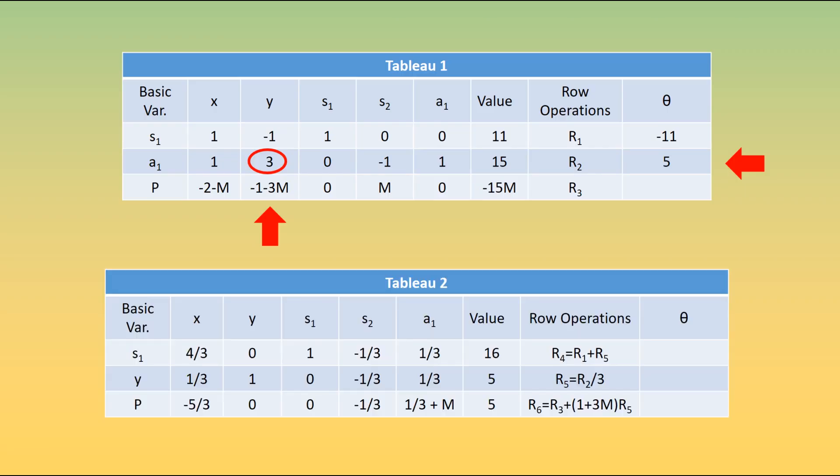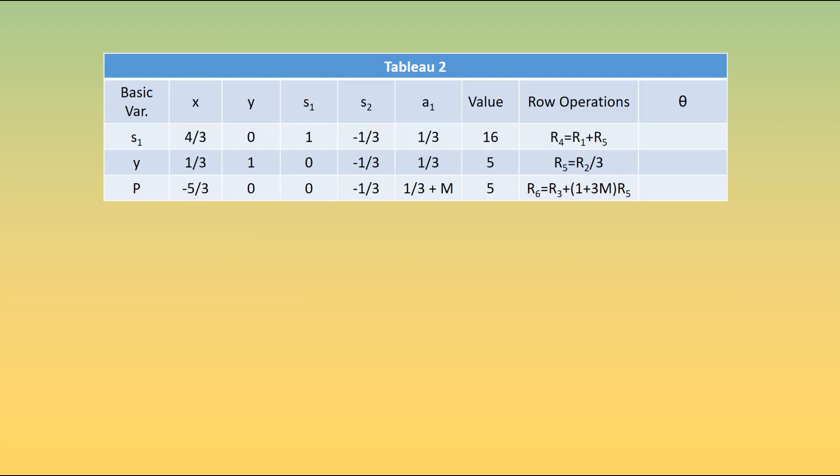We then construct our second tableau. We follow the standard simplex method. I'll add a link in the description below to my video on how to use the standard simplex method, just in case you're not too comfortable with it. But there are all of our row operations and the corresponding values. We then take our second tableau, and we once again identify the pivot column.